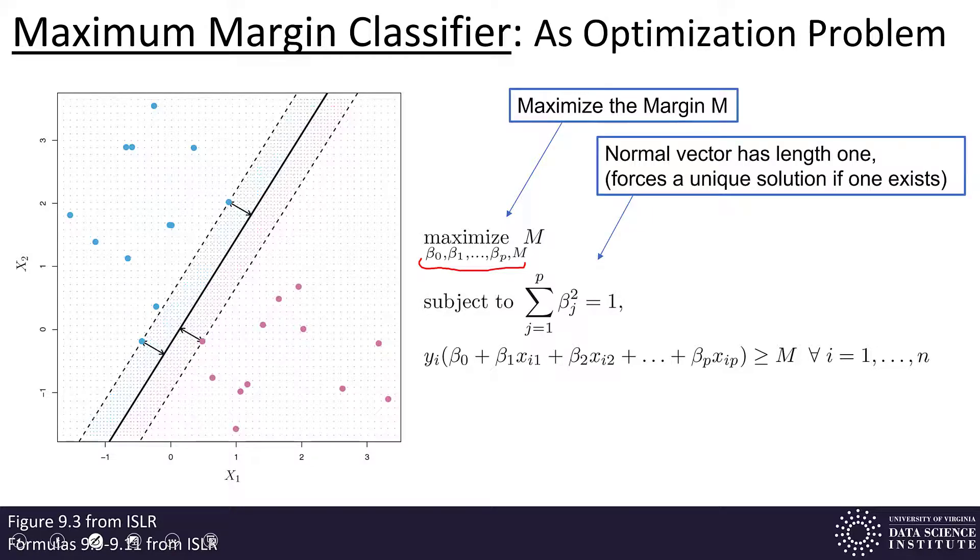Subject to this formula here. Now, remember we talked about the beta J's, where J goes from 0 out to p. All the betas after beta 0, they're the normal vector to the hyperplane. And so, this formula here says we want that normal vector to have length 1. What that does is it makes things, formulas work nicely, but it also forms a unique solution. So, it's more of something that makes things tidy as opposed to something that's essential for the classification.